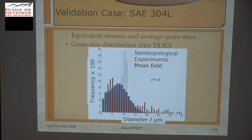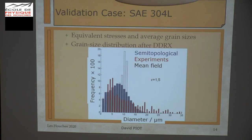Here is a validation case concerning 304 steel. We have equivalent stresses and average grain sizes with the standard mean field model. But for the grain size distribution — here you have the standard mean field in black, in red the experimental, and in blue what we obtained with the semi-topological approach — so it's much better.